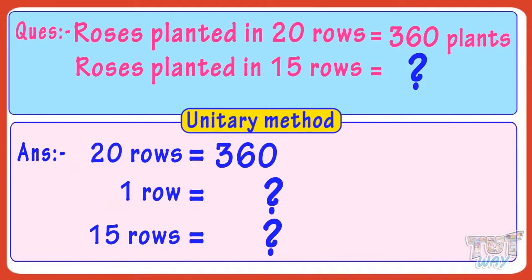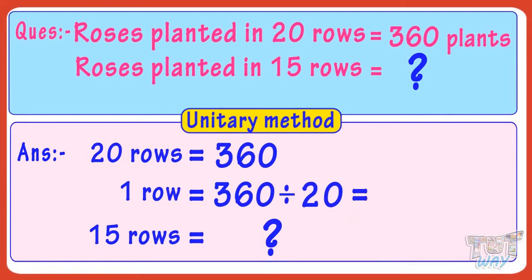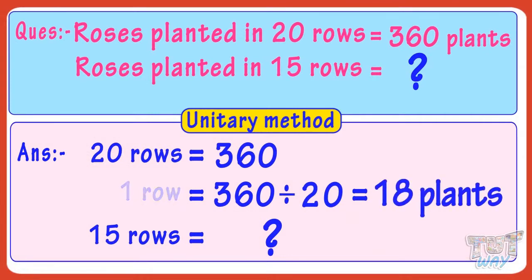So the number of plants that can be planted in one row is 360 divided by 20. And 360 divided by 20 equals 18. So 18 rose plants can be planted in one row.